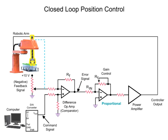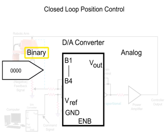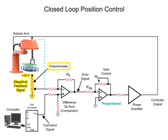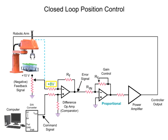To move the robotic arm to a specific position, a command signal from the computer starts the motion sequence. The analog command signal voltage produced by the digital-to-analog converter determines the position of the arm. The potentiometer attached to the robotic arm indicates the actual position, and the variable voltage produced is referred to as the feedback signal. When the feedback signal voltage matches the command signal voltage, the arm has reached the desired position.